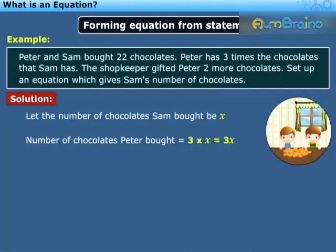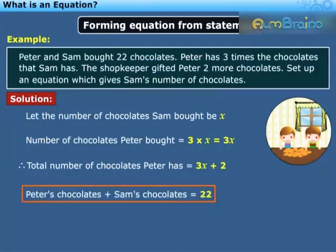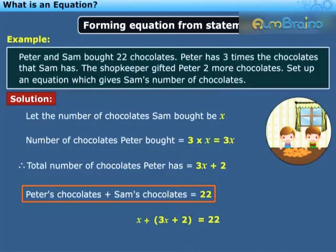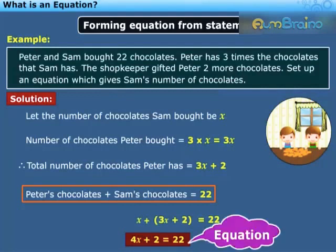Peter got 2 more from the shopkeeper, so the total number of chocolates Peter has is equal to 3x plus 2. The total number of chocolates they both have is 22, so we can write: x plus 3x plus 2 is equal to 22. Adding x and 3x we have 4x, hence 4x plus 2 is equal to 22 is the required equation.